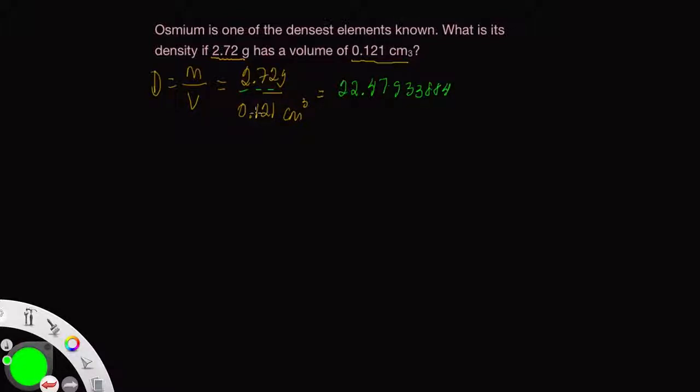There are three sig figs here. This zero is just a leading zero. Three here. So we want to round it off to the tenths place. Now this digit is greater than five so we want to round it up to 22.5.